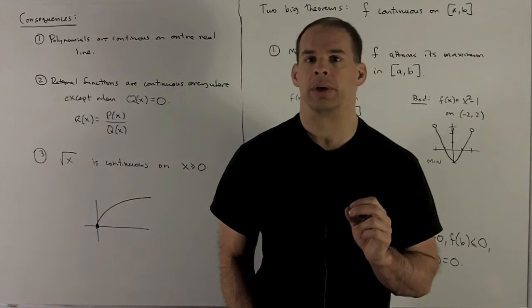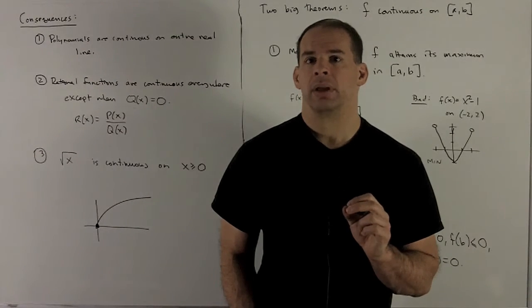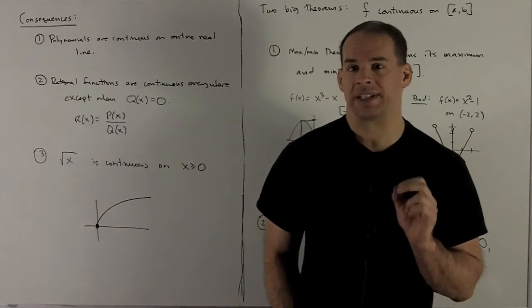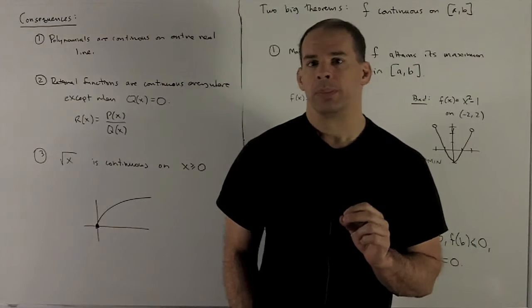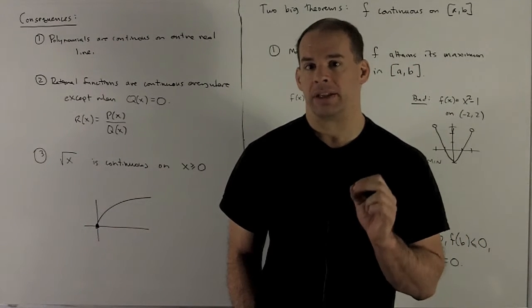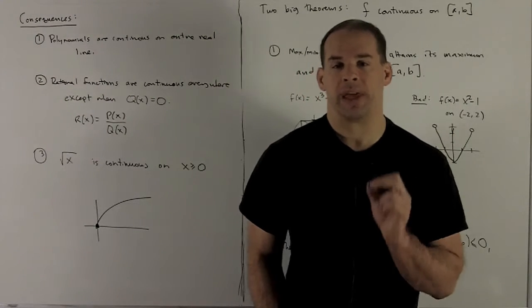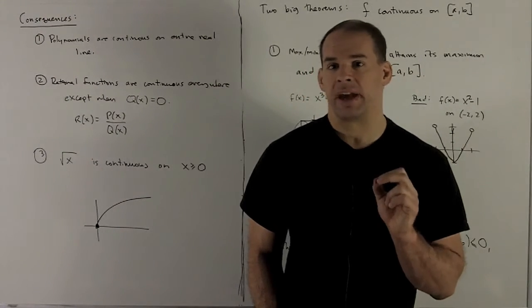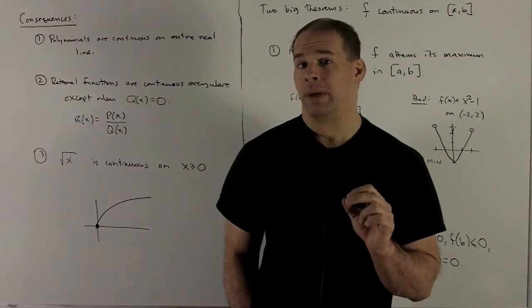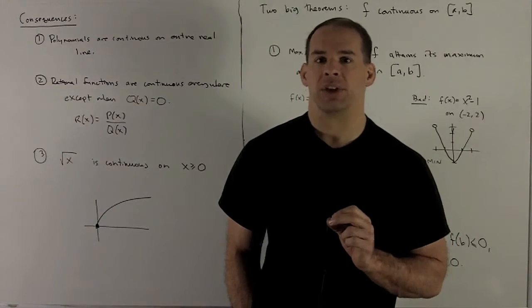Here are some consequences of continuity. Our first: polynomials are going to be continuous on the entire real line. We have an evaluation rule for getting the limit of a polynomial. That means you just take your point, stick it in the polynomial, that's your limit. Well, that's also the definition of continuity. So polynomials get continuous everywhere.